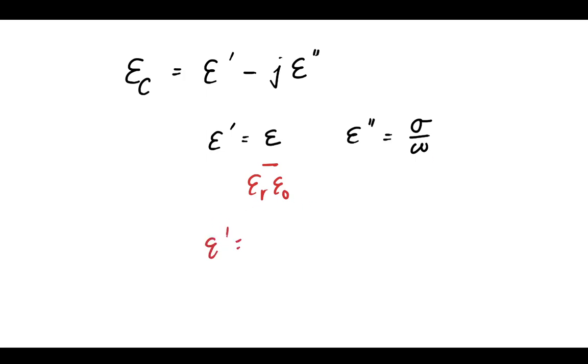And this epsilon double prime is like A, and this is like B, if we were to write the complex number as A minus jb in this case.